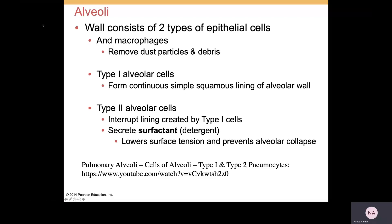There will be type 1 alveolar cells, which form a continuous lining of the alveolar wall — essentially a lining of simple squamous epithelium. Type 2 alveolar cells are studded throughout that lining and will secrete the very important substance known as surfactant.